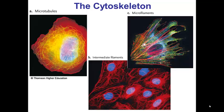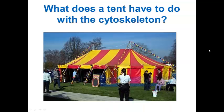The narrowest cytoskeletal polymer are the microfilaments or actin, and this polymer is primarily involved in cellular movement. These parts of the cytoskeleton can actually be compared to a tent and the parts that help hold that tent up.